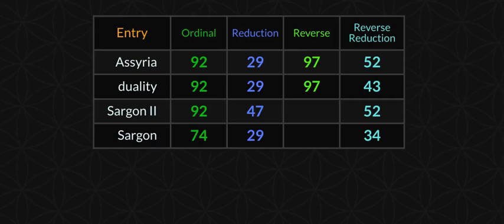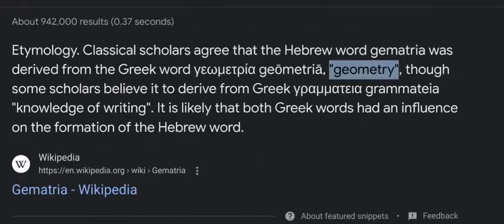You see the 92 and the 29 — it's the reflection. 92 and 29, and you see the 47 and 74, 52 and 25, 43 and 34. I just left the 97s in there but you see what's happening here.